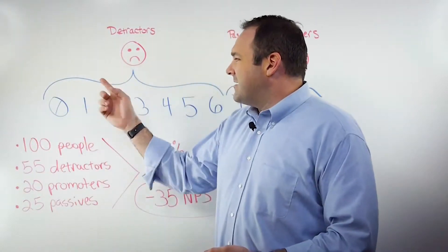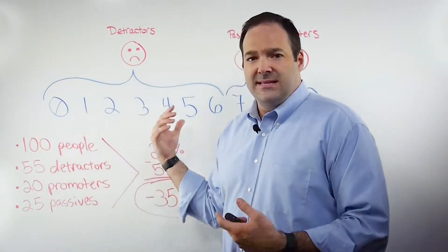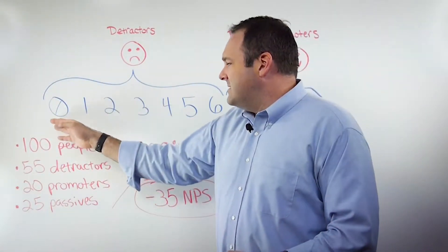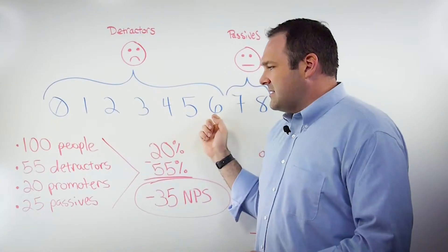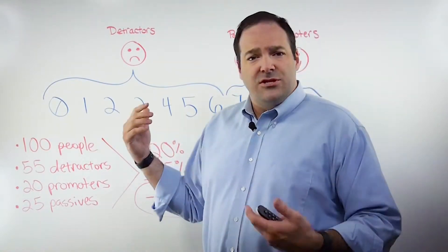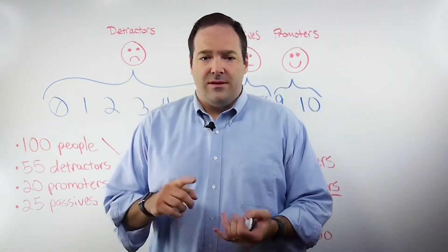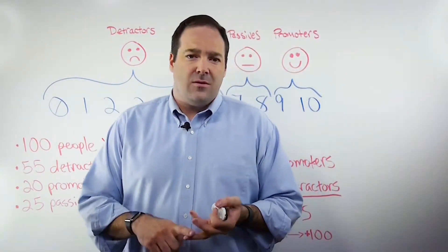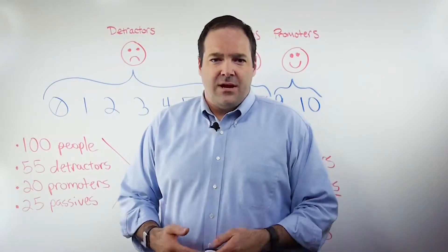And then there's detractors. This is the biggest segment within this group, and it's 0 to 6. Detractors are people who either don't care much about your brand or they're unsatisfied customers.